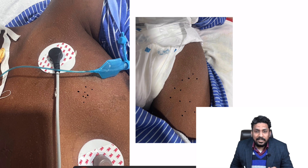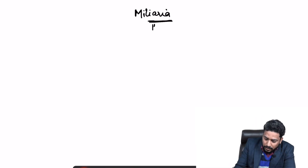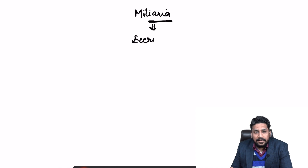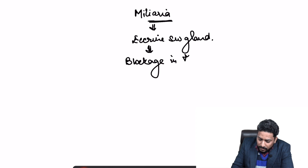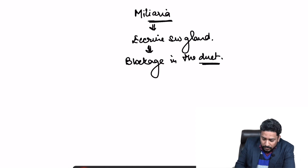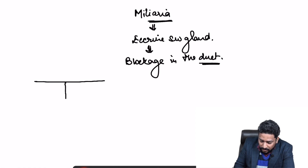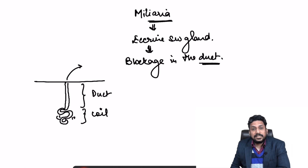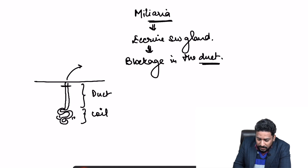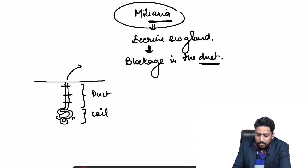Miliaria crystallina, as you all know, is due to occlusion of the duct of the eccrine sweat gland. So what is miliaria? Miliaria is a disorder of the eccrine sweat gland — when there is blockage in the duct of the eccrine sweat gland, it leads to miliaria. Consider this diagram: this is the skin, this is the duct of the eccrine sweat gland, and this is the coil or secretory portion. The duct directly opens over the skin surface, so if there is blockage in this duct, it leads to miliaria.